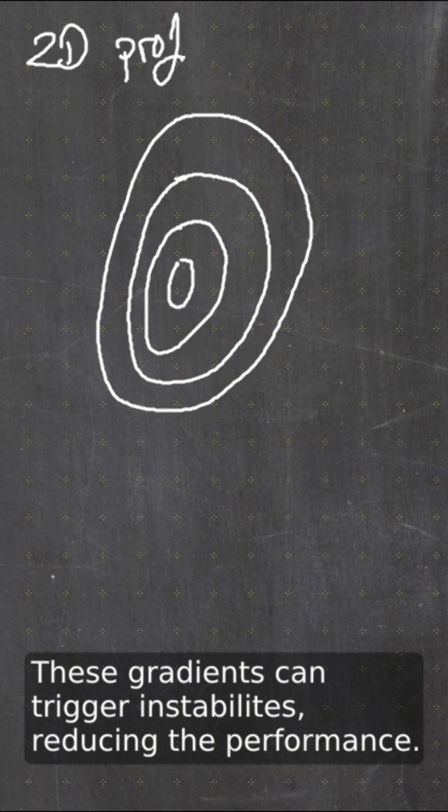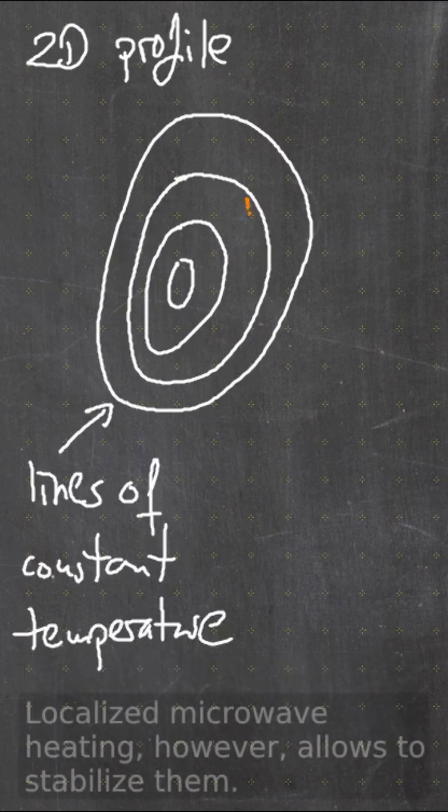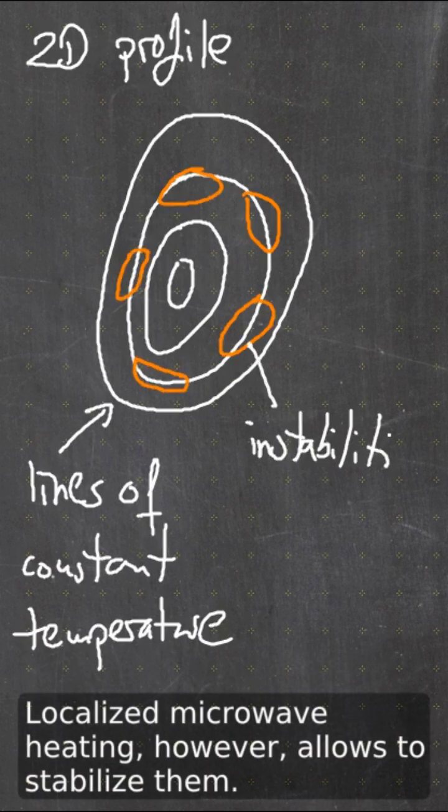These gradients can trigger instabilities, reducing the performance. Localized microwave heating, however, allows to stabilize them.